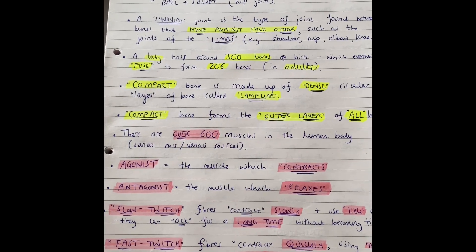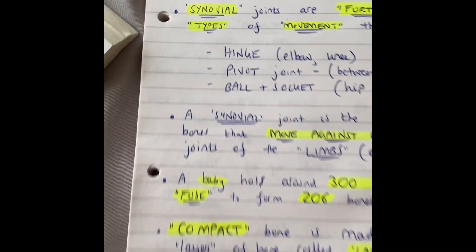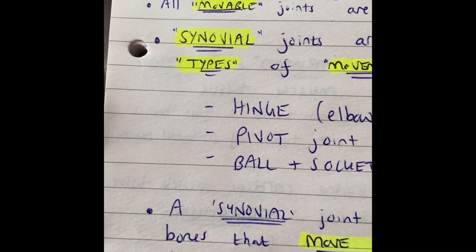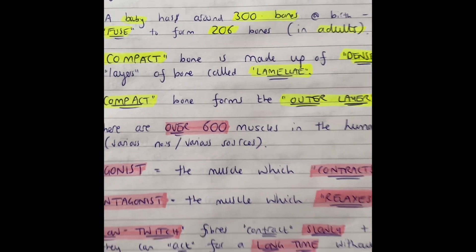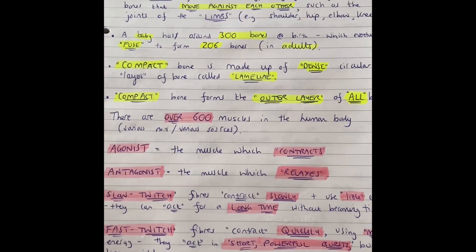When I'm taking notes on a new topic I will write in capital letters the words that I want to stand out, like SYNOVIAL for synovial joints or AGONISTS when I'm talking about muscles that contract.